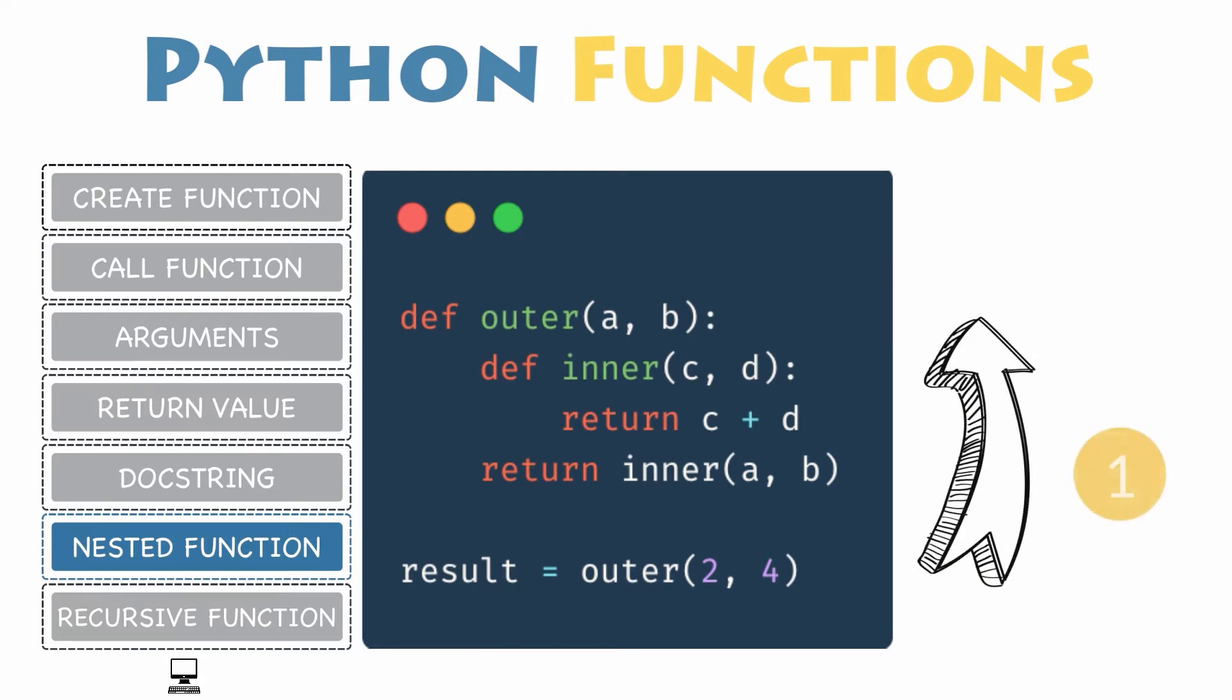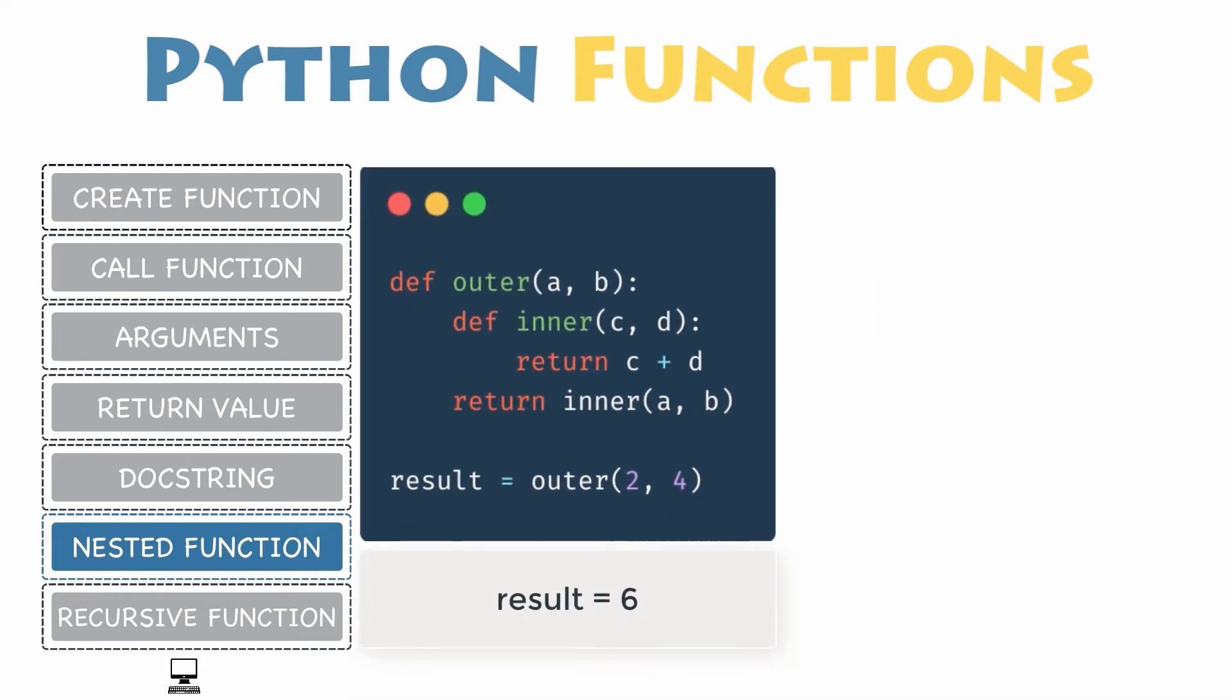In this example, the outer function simply defines an inner function that will return the sum of two variables. The outer function then returns the result of the inner function, which was adding both arguments.